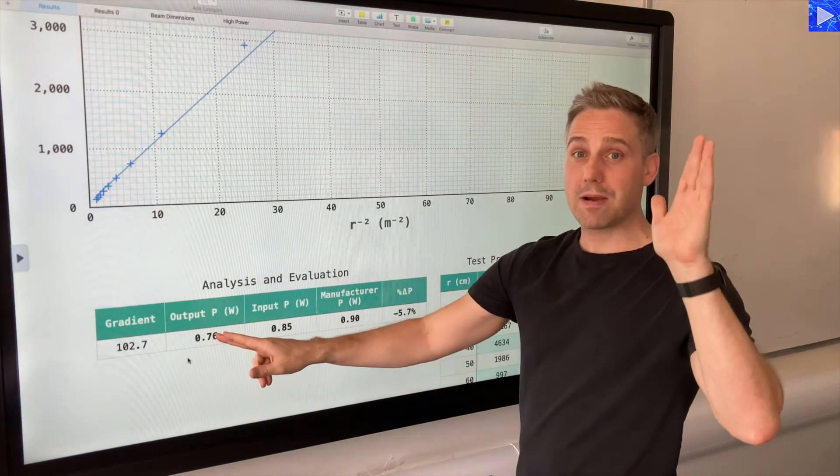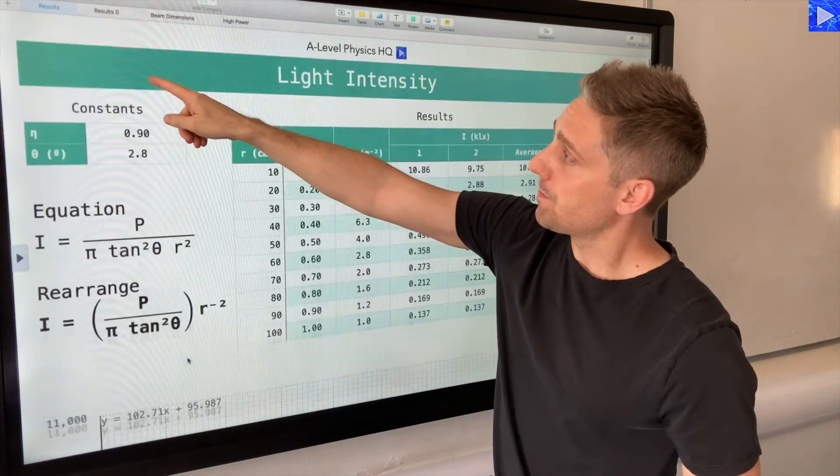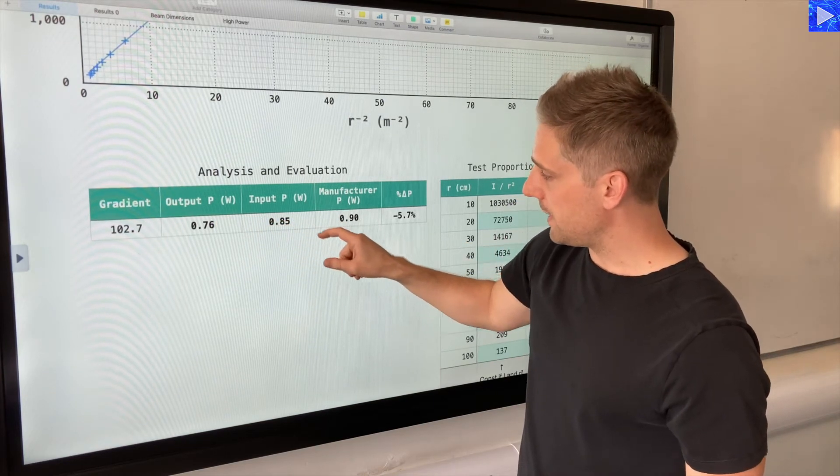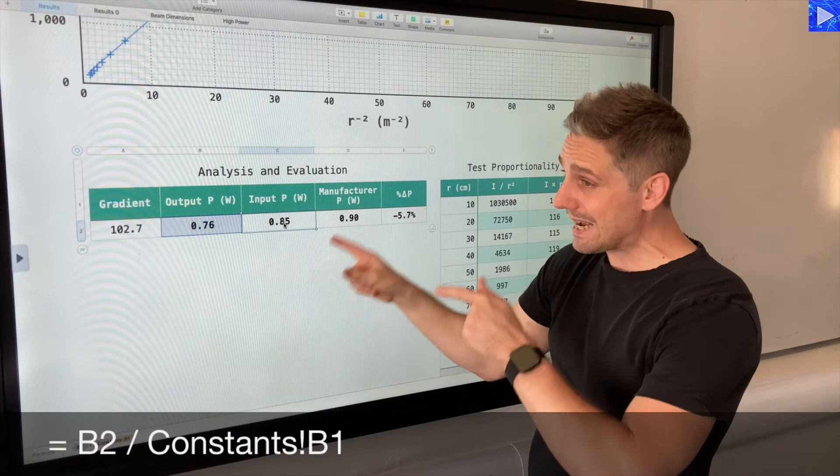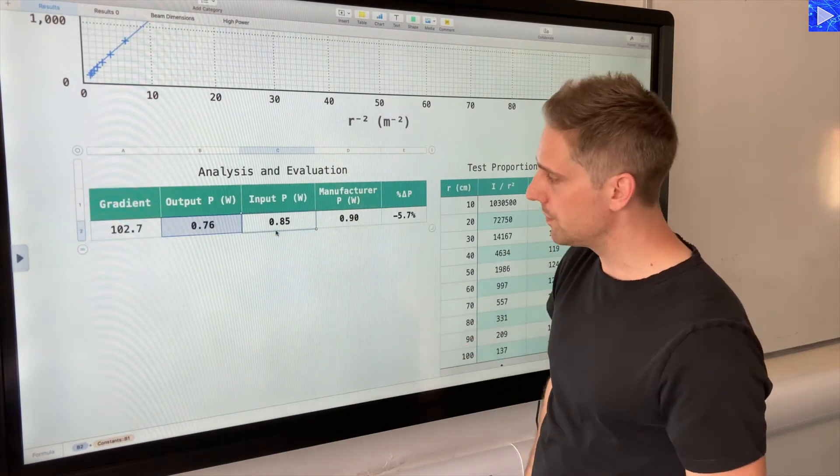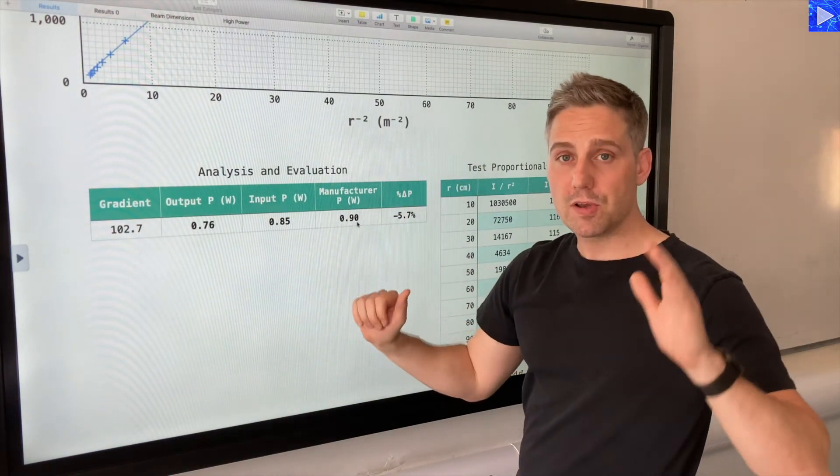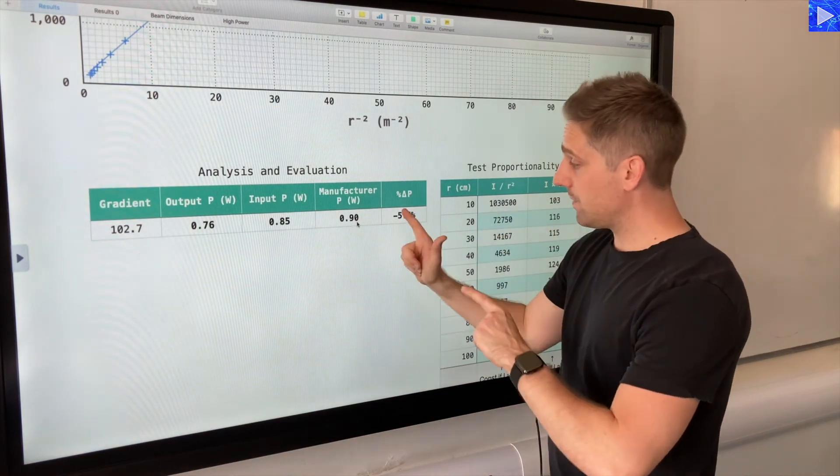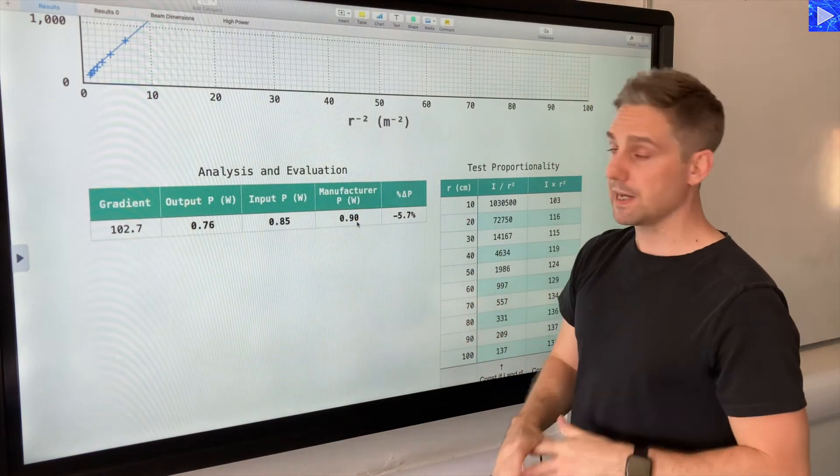So the efficiency of the LEDs is 90%, so 0.9. We take this value and divide it over here. So the input power is that output power divided by the efficiency. So what that gives me is the power of the battery for this output power of the bulb. Now the manufacturer power, so this is the power output for that battery on this setting in that torch, is 0.90 watts. And so if I do a percentage difference comparison between this and this, we get 5.7 percent percentage difference.